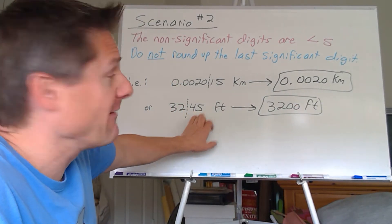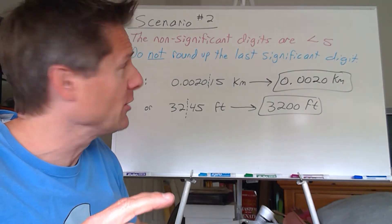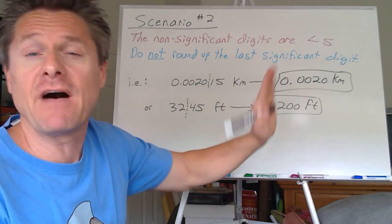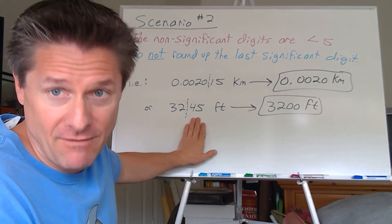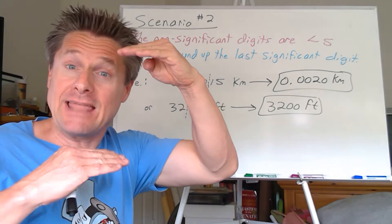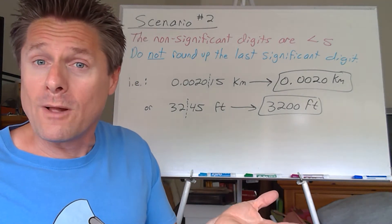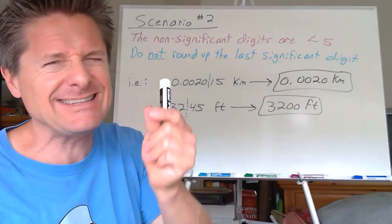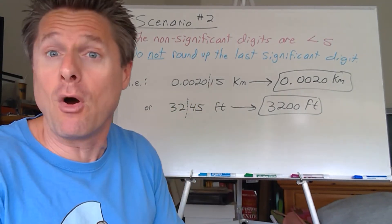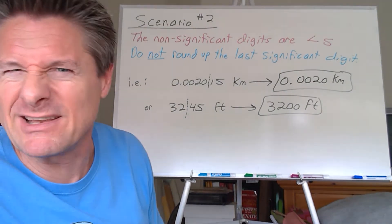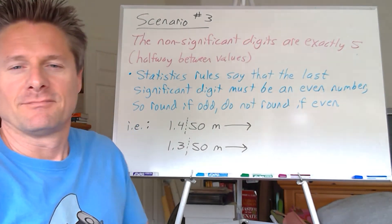If it were 3255 we'd round up to 3300. In introductory chemistry you probably learned: less than five, don't round up; five or greater, round up. But in my general chemistry class we add a third option — what if it's exactly five? What if it were 3250, exactly halfway between 3200 and 3300? In introductory chemistry we usually just say round up, but statistically that's not really accurate. It won't happen often, but let me show you what we do using statistics.